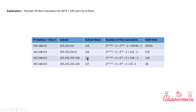For slash 27, that's 2 to the power of 32 minus 27. In the second step, we subtract 2 from the result, because the first and last addresses — the network address and the broadcast address — cannot be assigned to hosts. So we subtract 2 to get the number of valid host IP addresses.